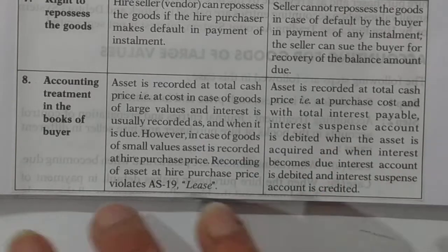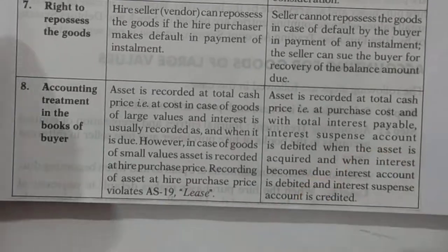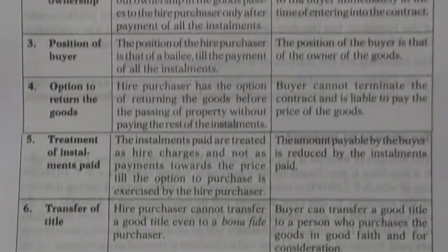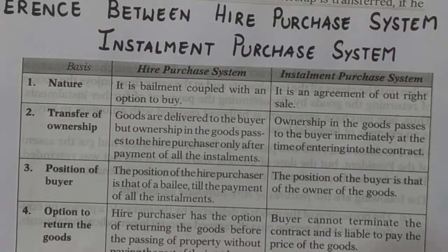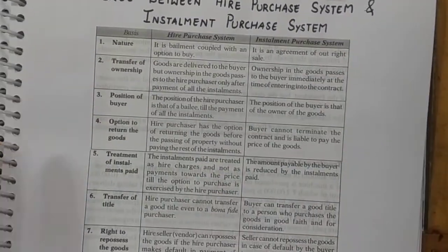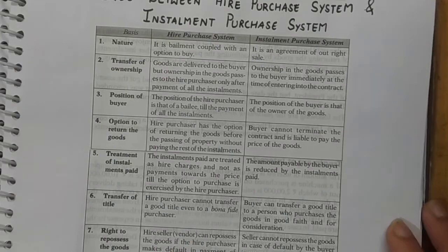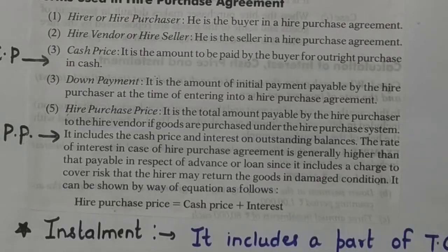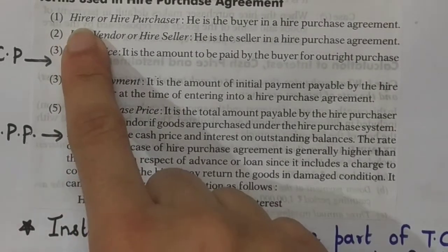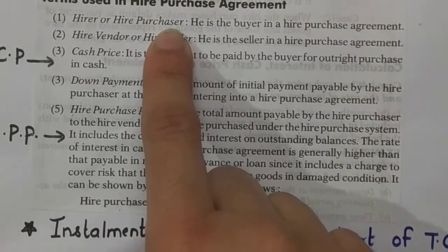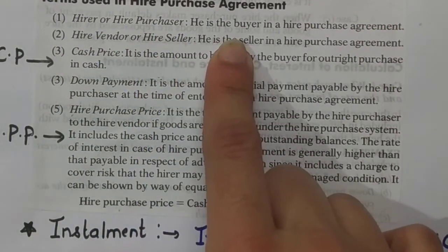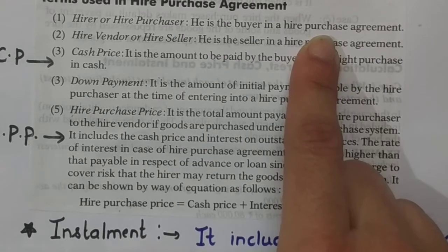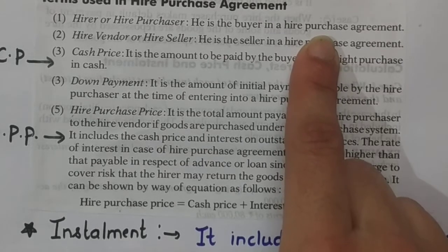That is the difference between the hire purchase system and the installment purchase system. I hope you are clear with the concept. Let's move further and understand a few key terms. The hirer or hire purchaser is the person who has purchased goods under a hire purchase agreement.